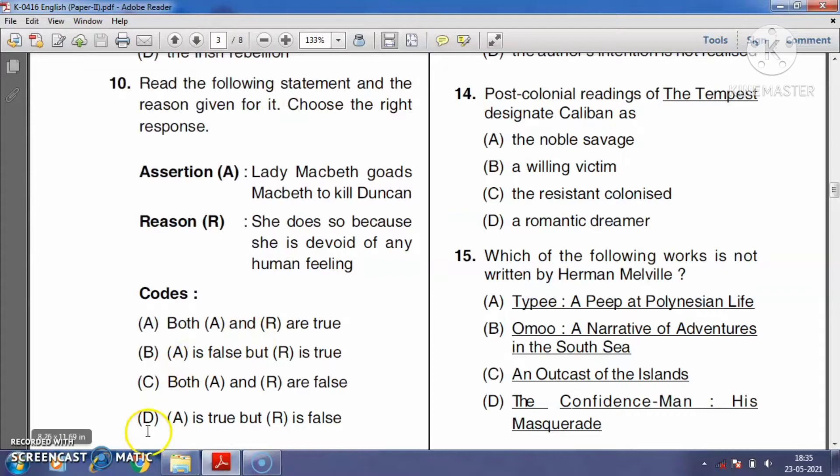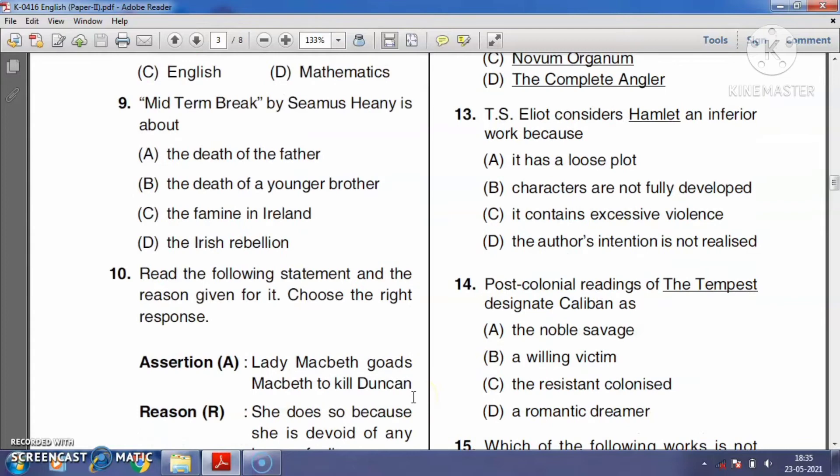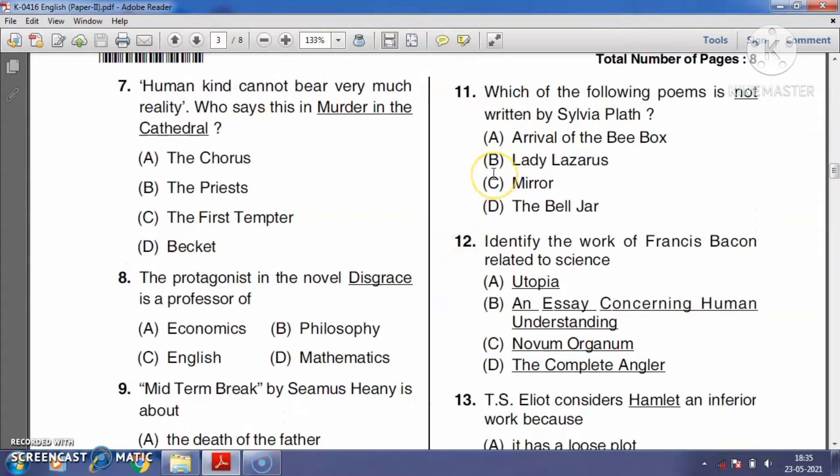Question number eleven: Which of the following poems is not written by Sylvia Plath? Sylvia Plath was an American poet, novelist, and short story writer. She was awarded the Pulitzer Prize in Poetry in 1982 and is best known for her poetry collections The Colossus and Other Poems and Ariel, as well as the novel The Bell Jar. All the poems listed were written by Sylvia Plath.